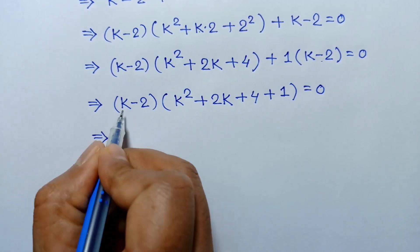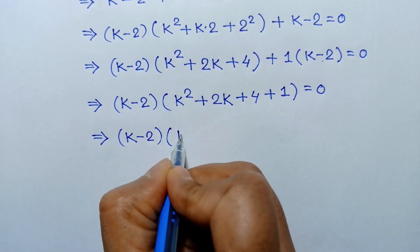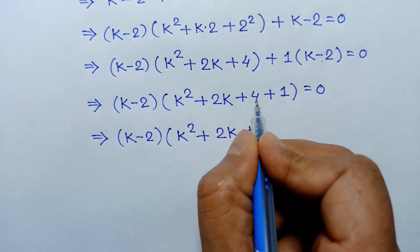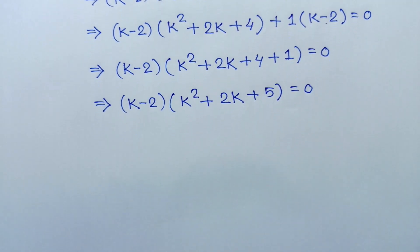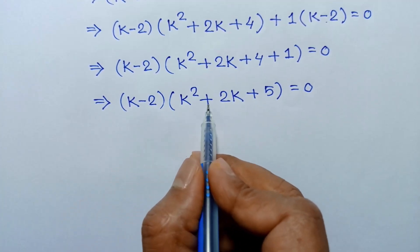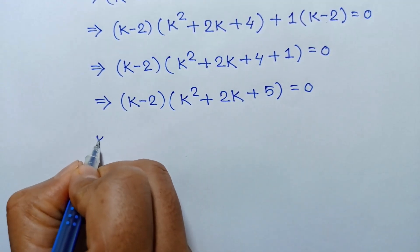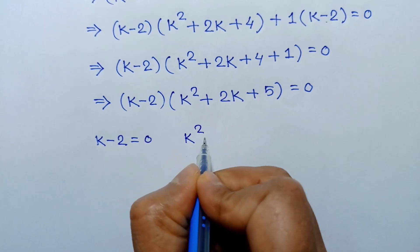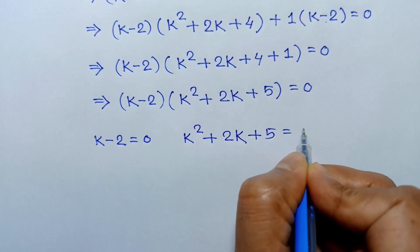So k minus 2 times k square plus 2k plus 4 plus 1, this is 5, is equal to 0. We can write k minus 2 equals 0 or k square plus 2k plus 5 equals 0.